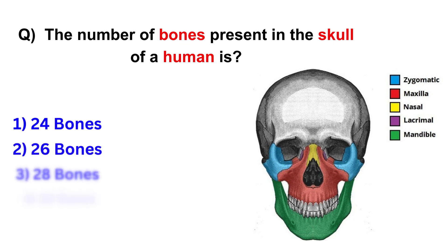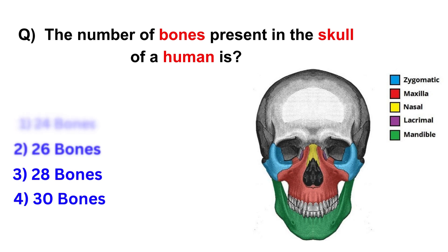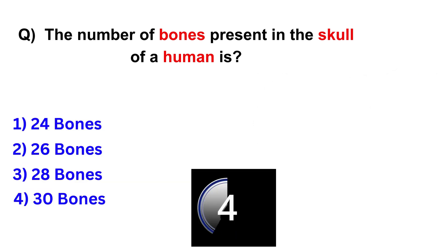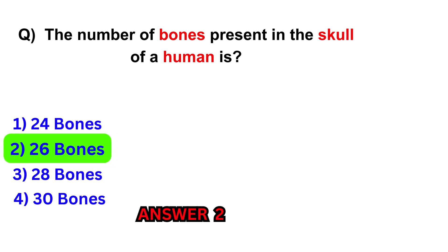The number of bones present in the skull of a human is? 24 bones, 26 bones, 28 bones, 30 bones. Answer: 26 bones.